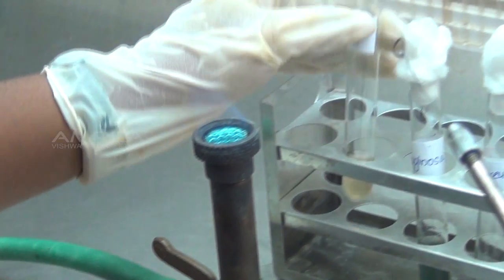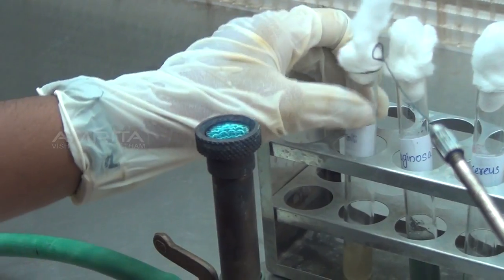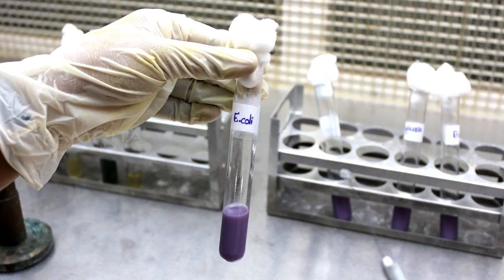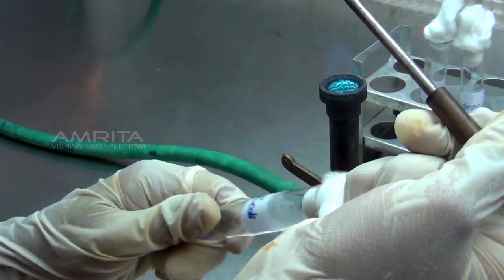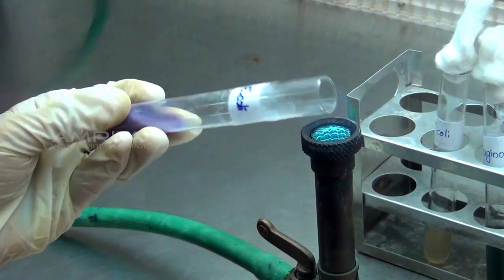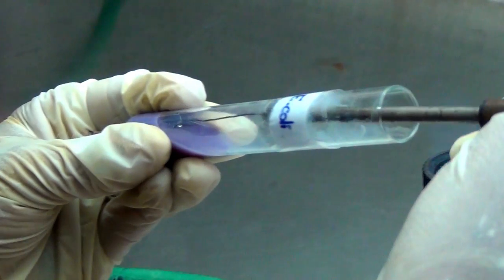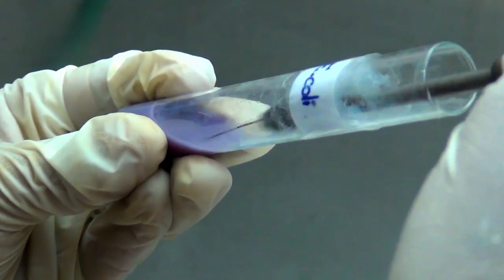Replace the cotton and return it to the rack. Take a sterile Litmus milk broth from the rack. Remove the cotton and flame the mouth of the tube. Inoculate a loop full of culture in the broth.